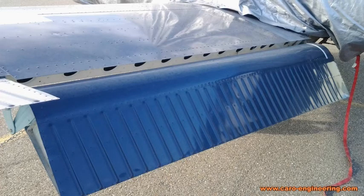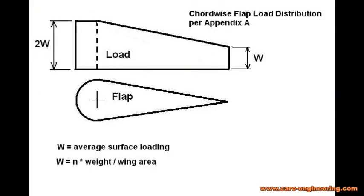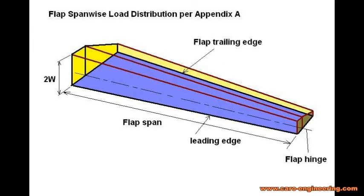You don't need to use the Appendix A methods if you have ways to calculate the loads more realistically. Using flaps as an example: the chord-wise flap load distribution is a rectangle of height 2W from the hinge forward to the leading edge, tapering off to the height of W at the trailing edge. W is the average surface loading, which is proportional to the maximum wing loading of the airplane and the maximum maneuvering load factor. The span-wise load is proportional to the flap chord. Summing it up gives you the total flap load for use in the structural analysis or load test.